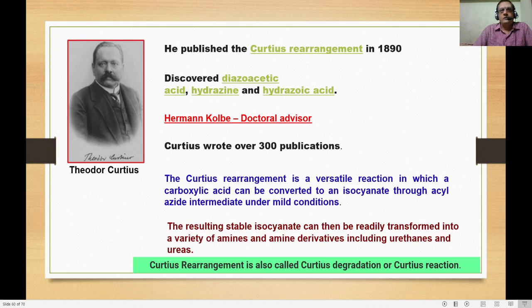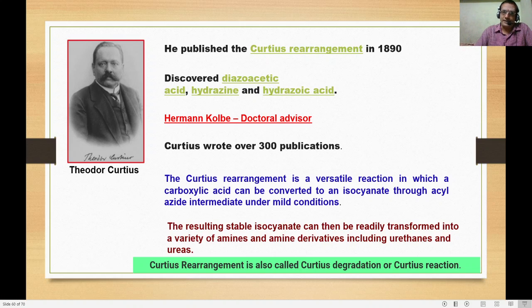Theodore Curtius published this rearrangement reaction around 1885–1890. He is also known for diazoacetic acid, hydrazine, and hydrazoic acid. He was a student of Hermann Kolb — whose Kolb reaction we already know — and published nearly 300 publications during the 1890s.